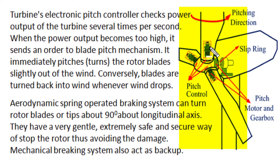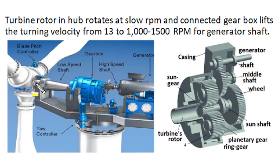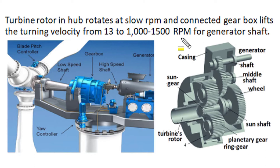In all wind turbine systems, a mechanical braking system is also provided as a backup safety provision. In the turbine, the rotor blade and hub rotate at a slow RPM of 10 to 15 revolutions per minute. The connected gearbox lifts the turning velocity of this high-torque, low-speed shaft to moderate torque and high speed — 1000 to 1500 RPM — as required for the generator in four-pole or six-pole configuration.